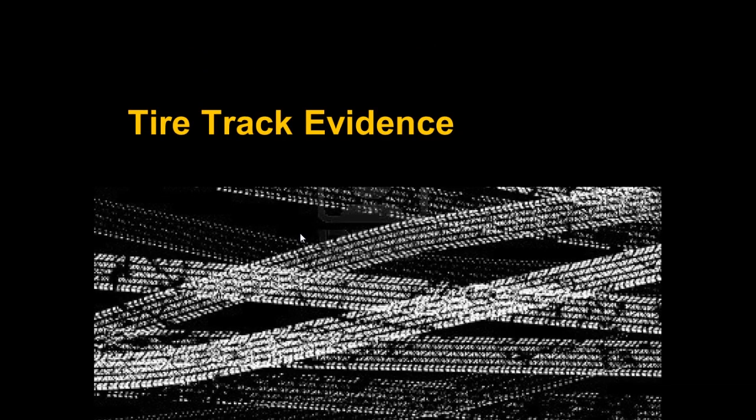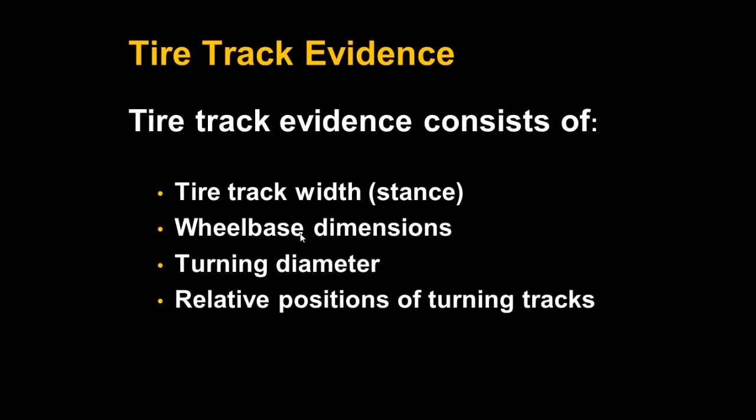Now let's move on to tire track evidence. If you remember, tire track evidence involves the patterns made by two or more tires, so that you can look at dimensional characteristics, among other things. Some of the most important things you can analyze with tire tracks are measurements such as tire track width or stance, wheelbase dimensions, turning diameter, and the relative positions of tracks when a vehicle turns.